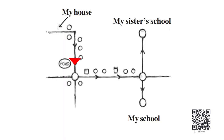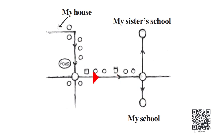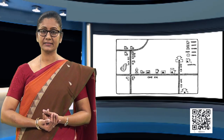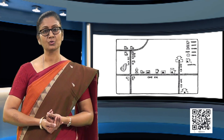Now children, look at this map drawn by Raghav showing the route of his school from his house. From this map, can you tell how far Raghav's school is from his house? Also, will you be able to tell whose school is nearer to the house — is it Raghav's school or his sister's school? It is very difficult to answer these questions because we do not know if the distances between the landmarks have been marked properly in the map.